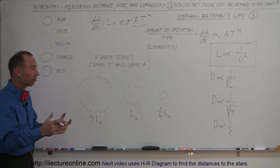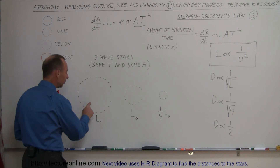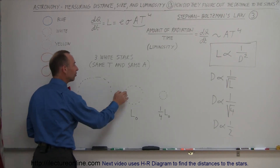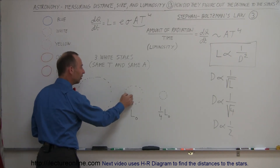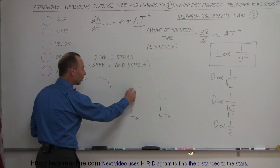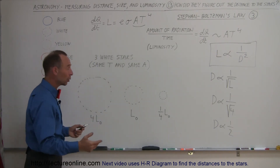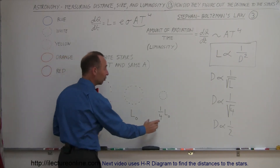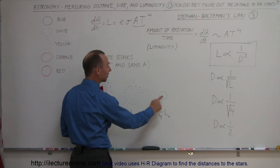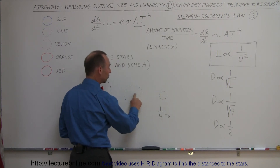So if the difference in luminosity is four times, the difference in distance is twice — meaning one star will be half the distance of the other. By the same token, if the third star has one quarter the luminosity, it must be twice as far as the second star.